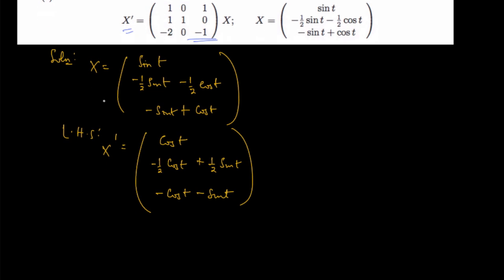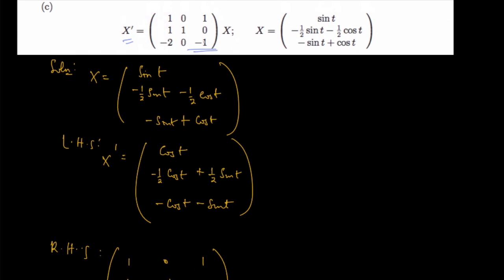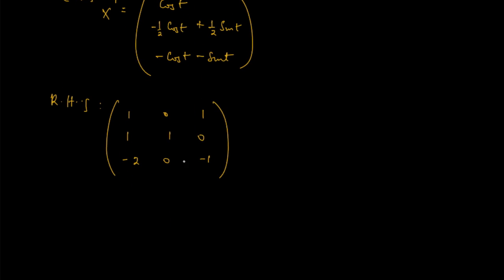The next thing is to verify the right-hand side, which is the coefficient matrix times x. The coefficient matrix we are given is: row one is 1, 0, 1; row two is 1, 0, negative 2; row three is 0, negative 1. We then multiply that by the proposed solution vector: sine of t, negative half sine of t minus half cosine of t, then minus sine of t plus cosine of t.